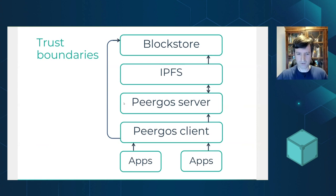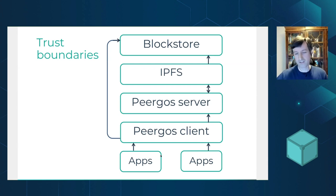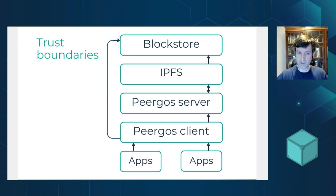Pyrgos breaks down into several trust boundaries — mutually untrusting regions. If any data or hashes cross one of these boundaries, it's verified by the recipient, whether it's a hash or a signature. For example, the Pyrgos client doesn't trust the Pyrgos server, the server itself doesn't trust IPFS, and apps are also sandboxed off from the client. These sandboxes are actually OS-level processes, necessary for protection against side channels from things like Meltdown and Spectre. There's also a direct S3 block store case where the block store itself verifies hashes of writes from the client.